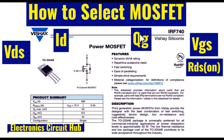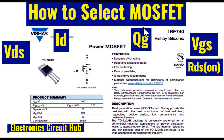What is QG? QG is the gate charge of the MOSFET. Why do we need to look at the parameter QG? Because QG defines the switching speed of the MOSFET.